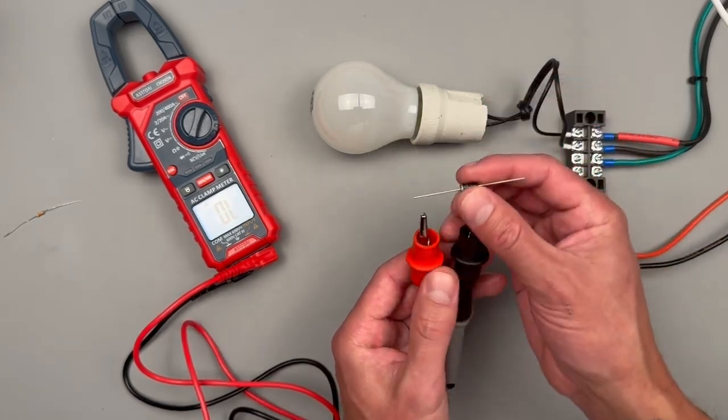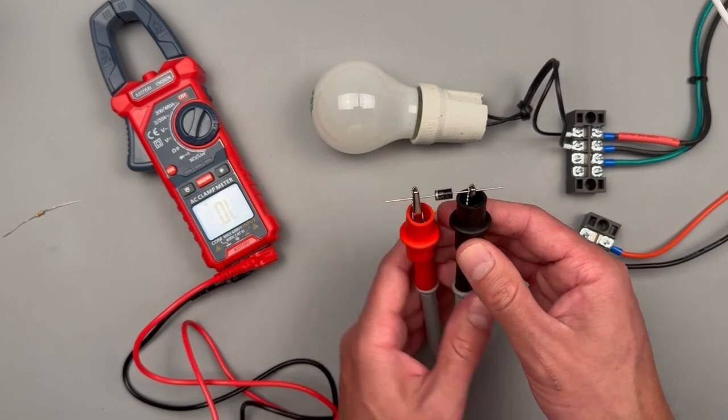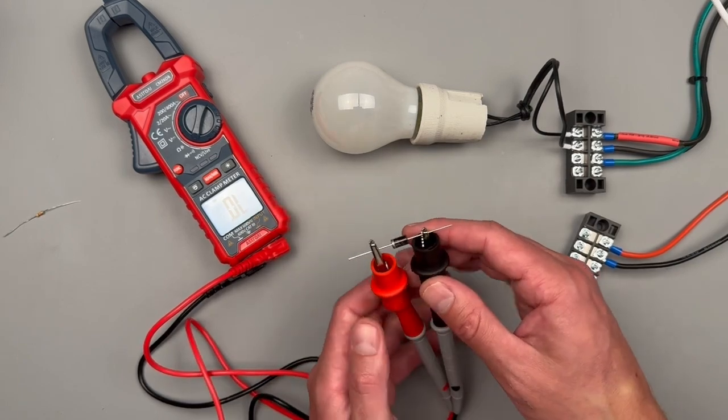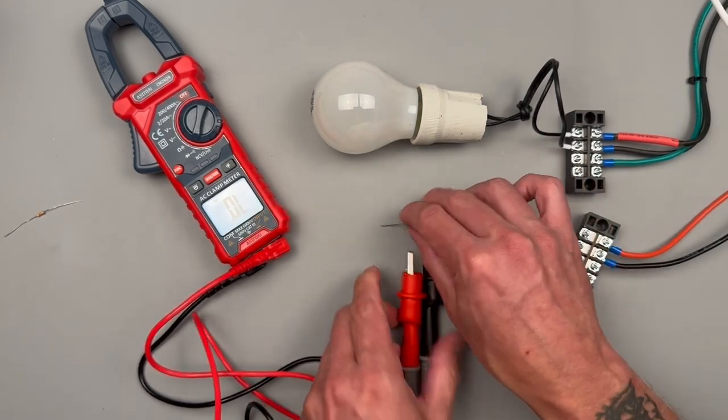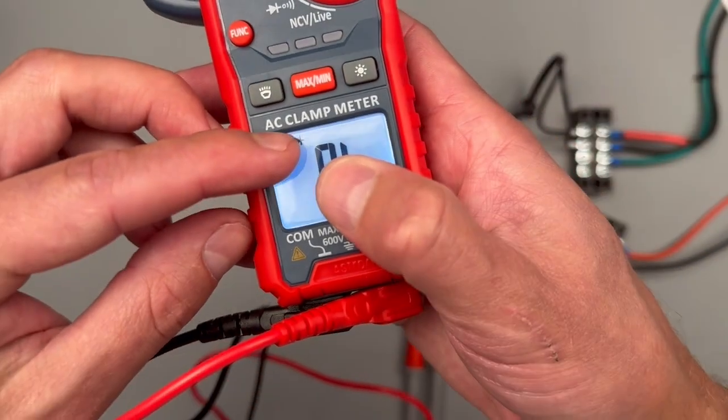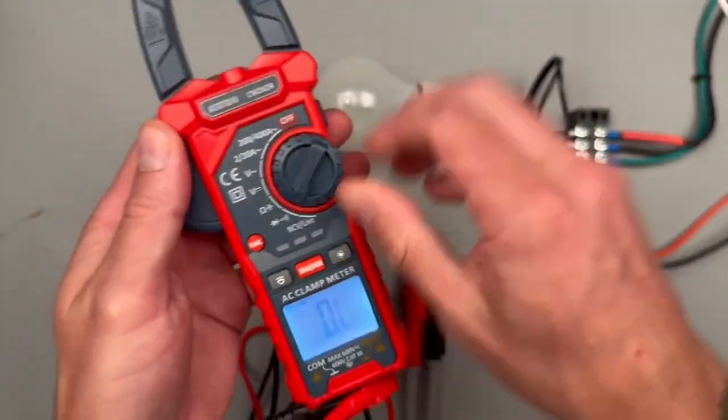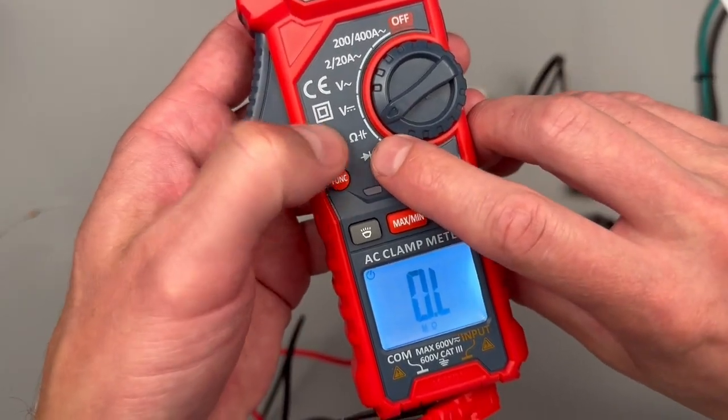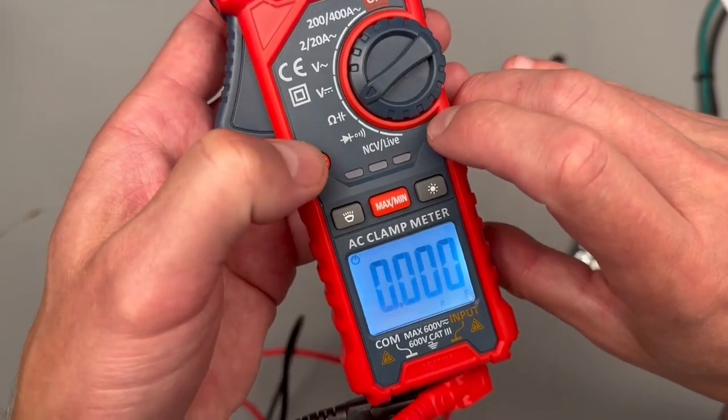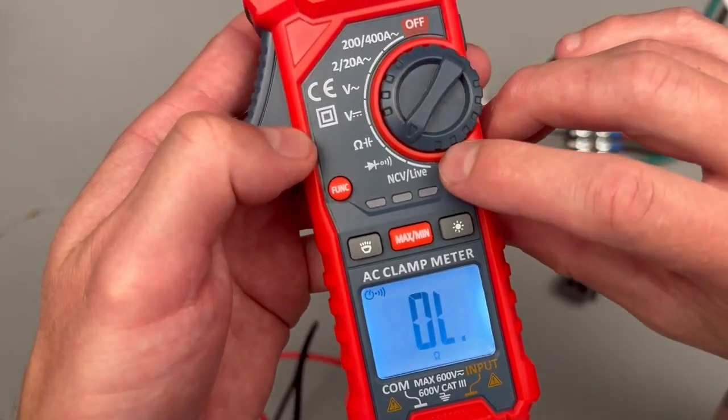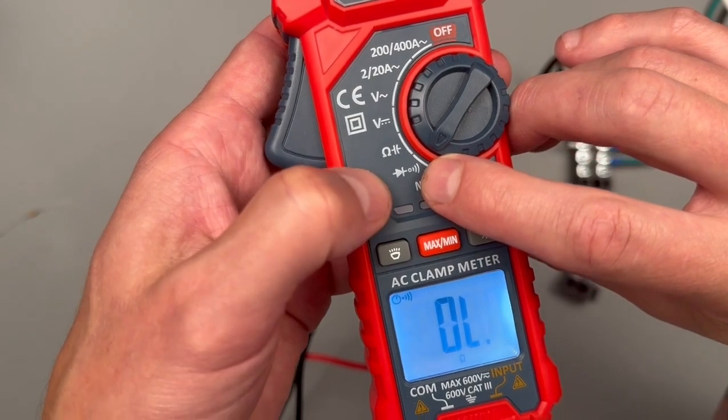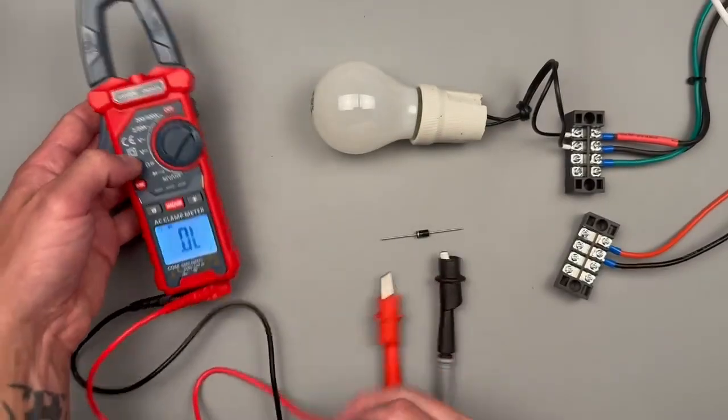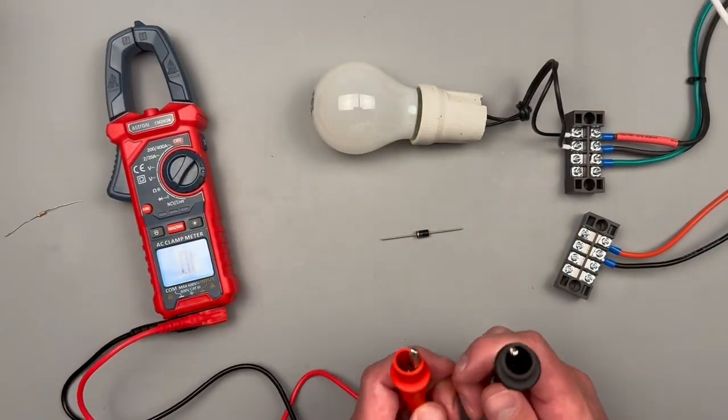And then we'll always test our diodes in both directions. So we'll flip it, we should have no flow, and you should have an OL on your meter. OL stands for a few things: could be open loop, could be over limit, just depends on the context of the testing that you're doing. And a way to verify that you're on the diode setting is that little arrow with that line, it's for your diode. The way that they have it set up, this one will default to continuity, and if you press function then it will go to diode testing. Pay attention to the screen and what the meter wants to default to and keep an eye on that.